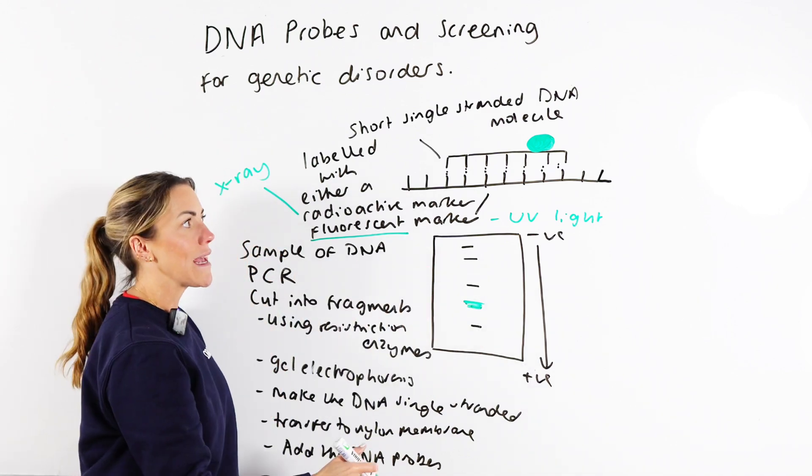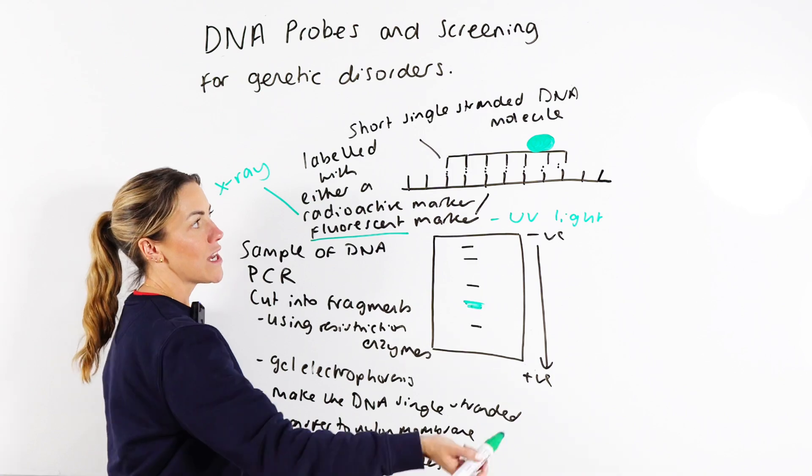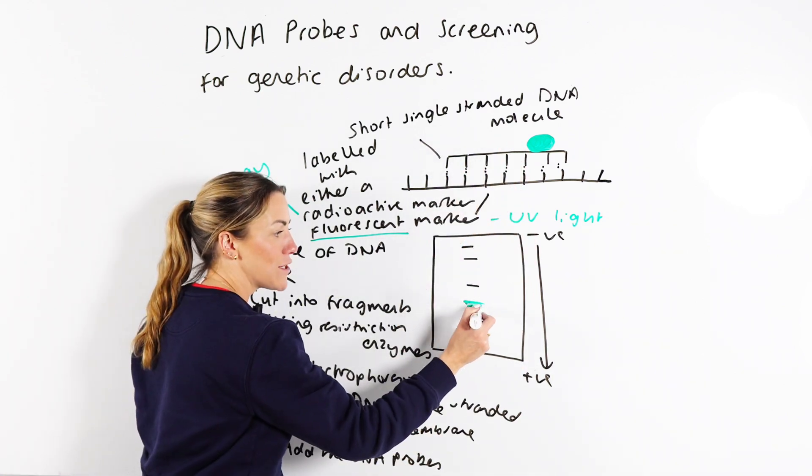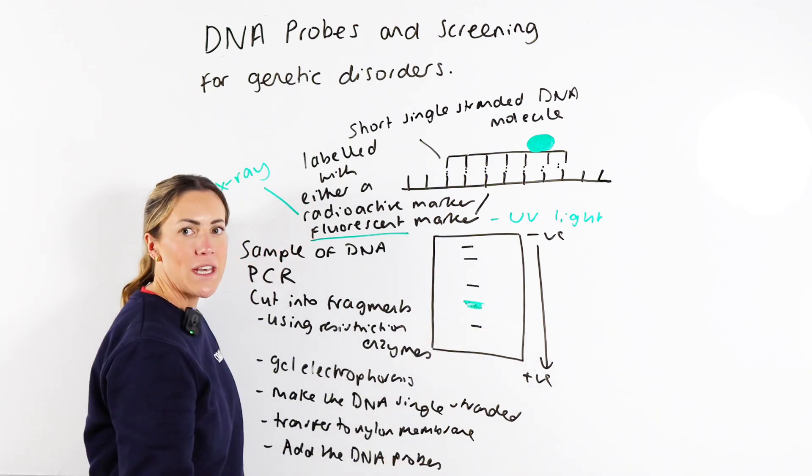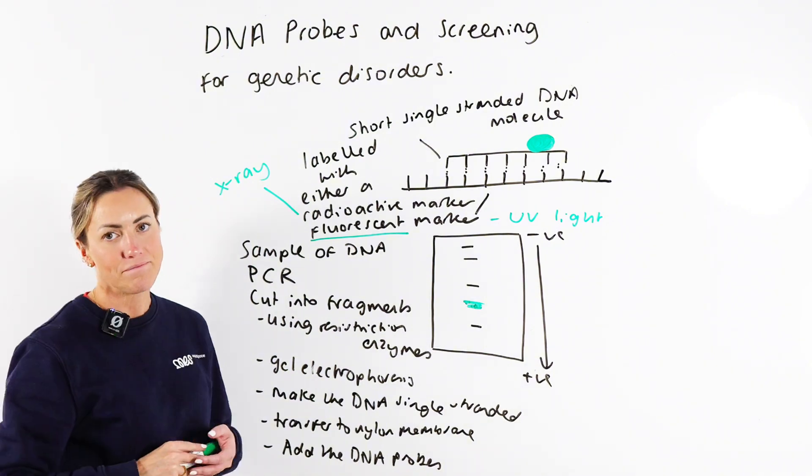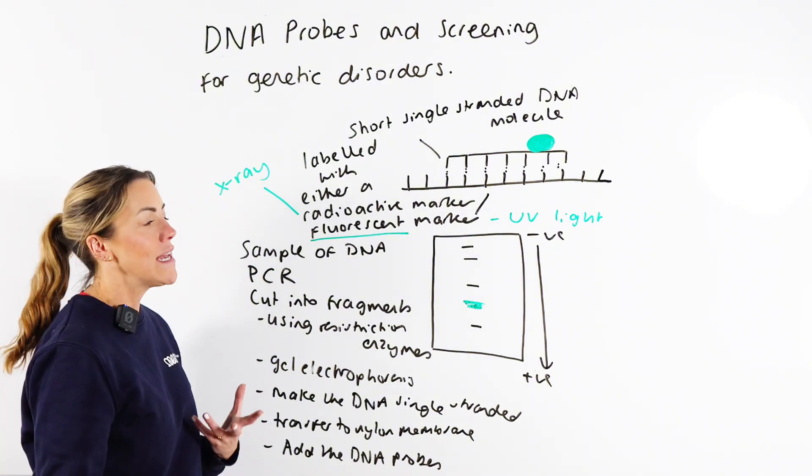That's going to tell me the probe is there, the probe has bound, the fluorescent marker is there. Then I know they must have had that allele. So I'm detecting the presence of this particular allele in this person's DNA using a DNA probe. Now, what's important for you?